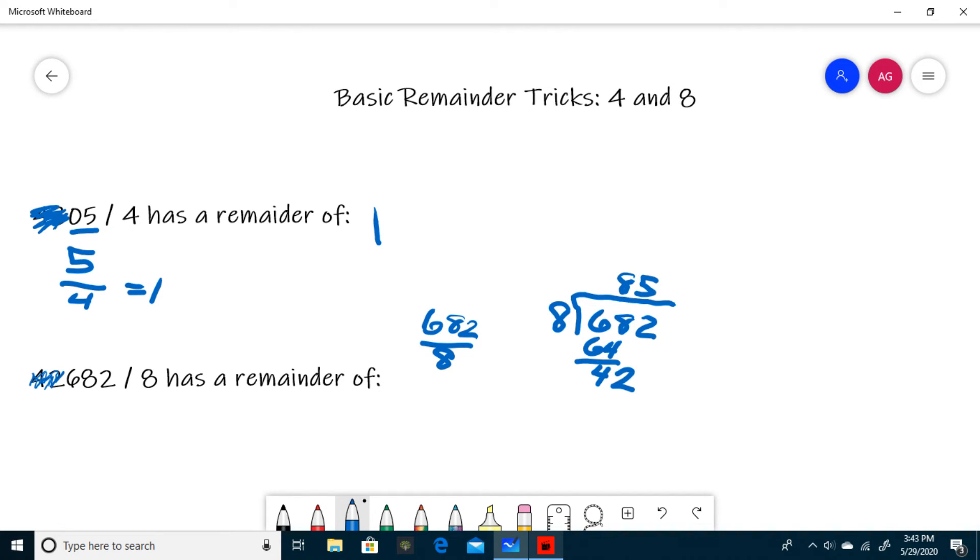And so the remainder, when 42,682 is divided by 8, is 2.